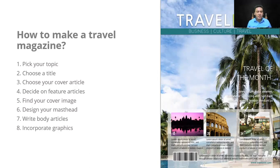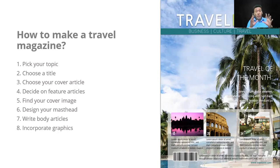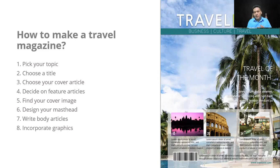Point 6: design your masthead. The masthead means — for example, we chose the title of the magazine, which is 'Travel Pot' in this example — and then it says 'Business, Culture and Travel.' Designing your masthead means giving a good design to the title or heading of the magazine. In this case, 'Travel Pot' has an attractive, legible font. You'll design it with whatever font you find most convenient and attractive.